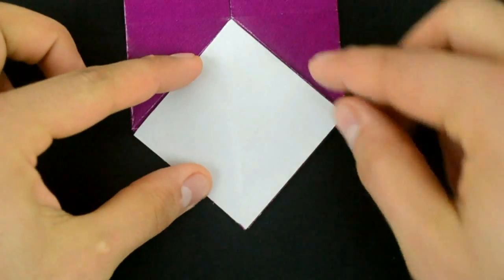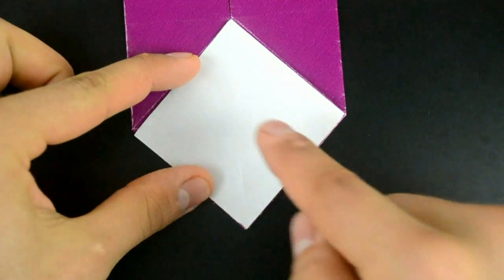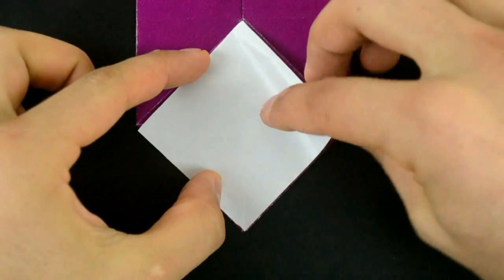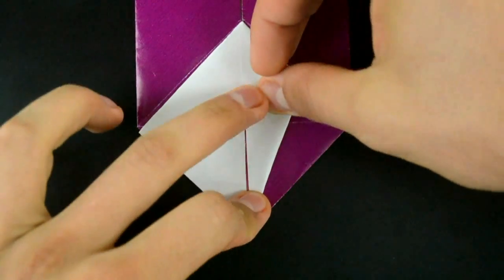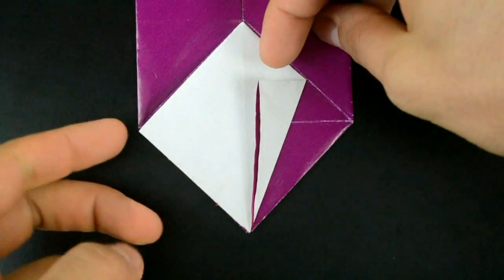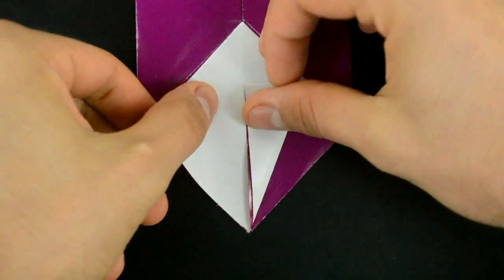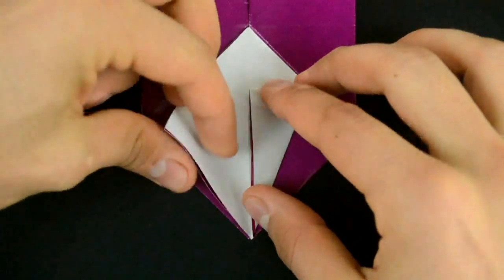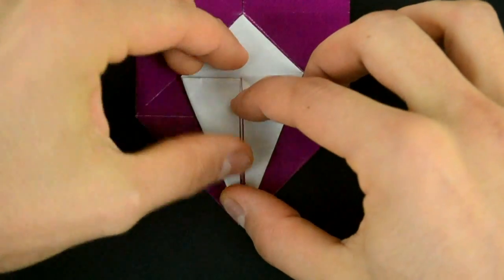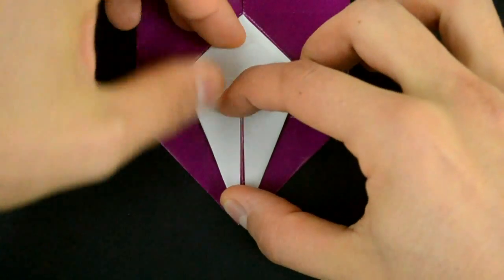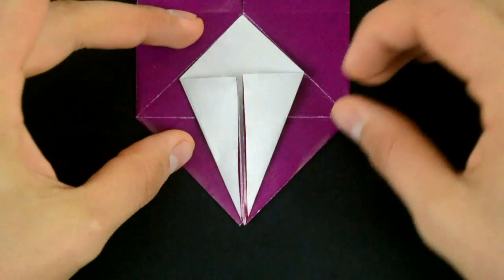For the next step, let's fold the right side to the middle. Like this. Also the left side. Exactly the same. And undo both.